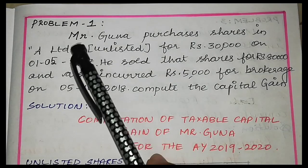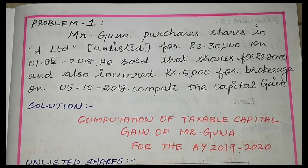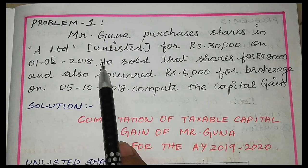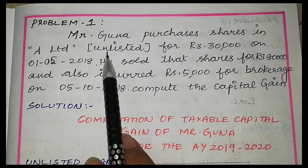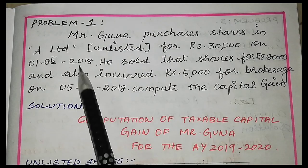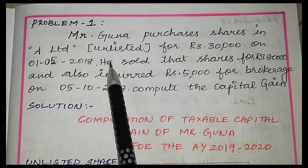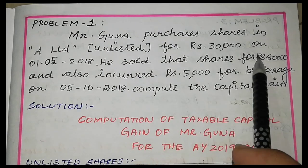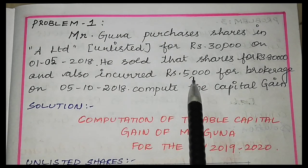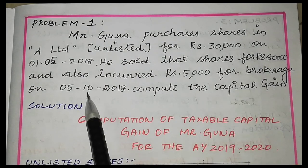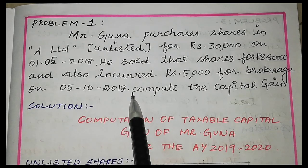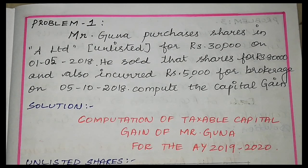Let's see the first problem. Mr. Gunnar purchases unlisted shares for Rs. 30,000 on 1st May 2018. He sold those shares for Rs. 80,000 and also incurred Rs. 5,000 for brokerage on 5th October 2018. With the date of purchase and date of sale, we will be able to compute taxable capital gain and identify the type of asset.